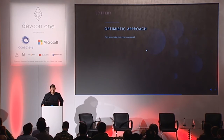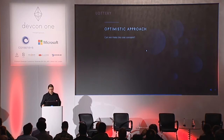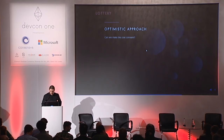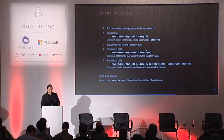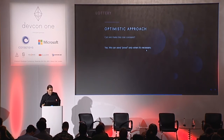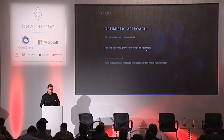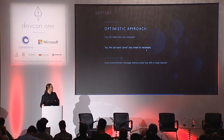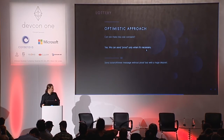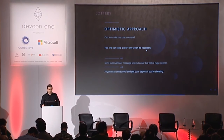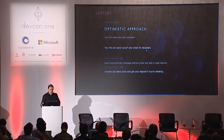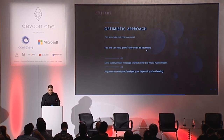We believe we can do even better and keep the cost of the whole lottery constant. This setting requires some optimistic assumptions: the proof is sent only when necessary — meaning only when someone is cheating. So a winning node sends a lottery-winner message without any proof and stores a large deposit, which would be paid to another node if that sending node is a cheater. After that, anyone participating in the network can send a proof, and if the cheater is revealed then the node sending the proof gets the deposit and the winner gets the prize.